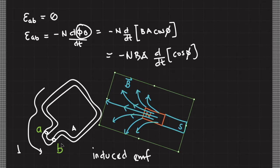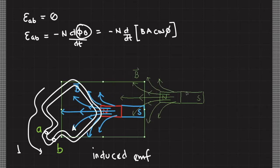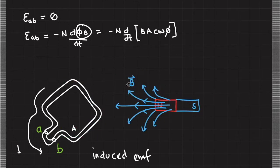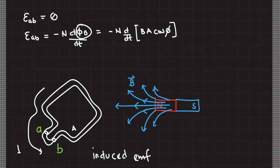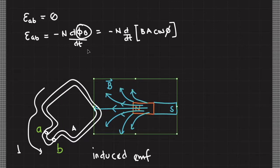If this is a closed loop, then there will be an induced current. When I move the permanent magnet towards the conducting loop, recall that tightly spaced magnetic field vectors mean a stronger magnetic field in that region. So as I move the permanent magnet closer, the area vector experiences a greater number of magnetic field lines, and hence the strength of the magnetic field increases during this motion. This is where the time rate of change of magnetic flux comes in.